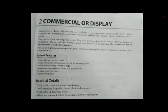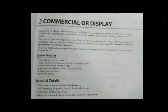After that, I would like to talk about essential details. It has some essential details. First, name of the company, institute, organizers, etc. Second, details regarding the product, event, or educational courses. Third, special offers or discounts, if any. Fourth, address and contact details of the company, institute, or organizers. Students are advised to do some exercises based on both topics in the notebook. Thank you.